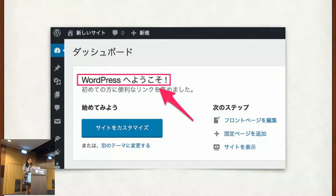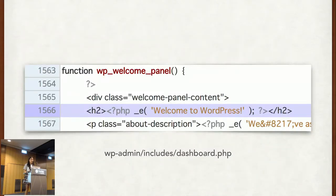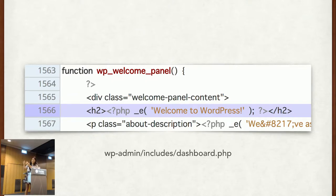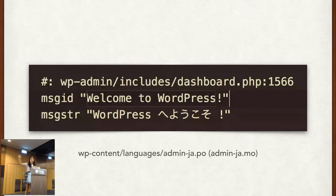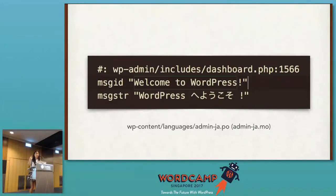So let's see how gettext calls translation strings. This is a Japanese version of the WordPress dashboard, and the red line says 'Welcome to WordPress.' This is the source code for that screen. You can see it's between the opening and closing tags of H2, and we call the gettext function using PHP. This is the source code, and this is the content of the language file that WordPress downloaded from the repository. It makes pairs of the original string and the translated one.